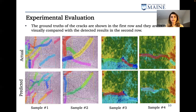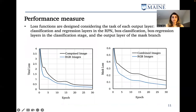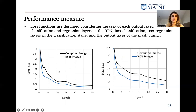Finally, we got the results. These images show the original and annotated images alongside what the algorithm produced, for four sample images — two RGB and two combined RGB and infrared images. We also measured the loss for each output layer: classification and regression layers in the RPN, box classification, and box regression layers in the classification stage, and also the output layer of the mask branch. We found that combined images have more loss compared to the RGB images for both total loss and mask loss.